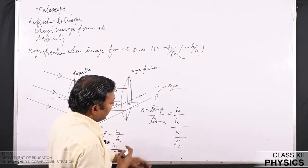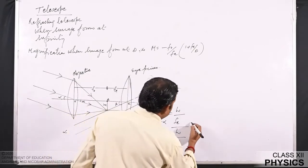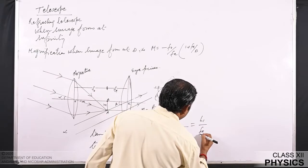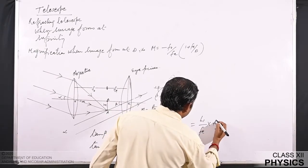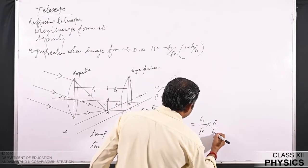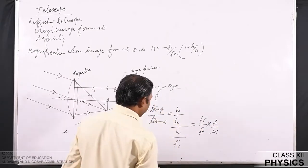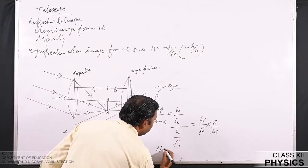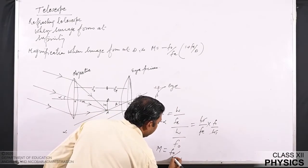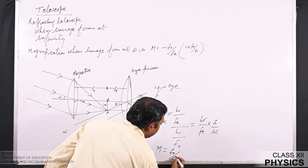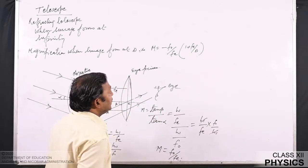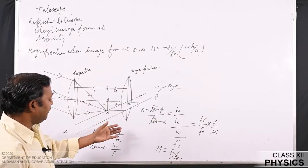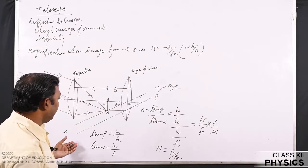Taking the ratio, magnification M = tan β / tan α = (h1/Fₑ) / (h1/F₀). Rearranging gives M = F₀/Fₑ. This is the magnification produced when the final image forms at infinity.